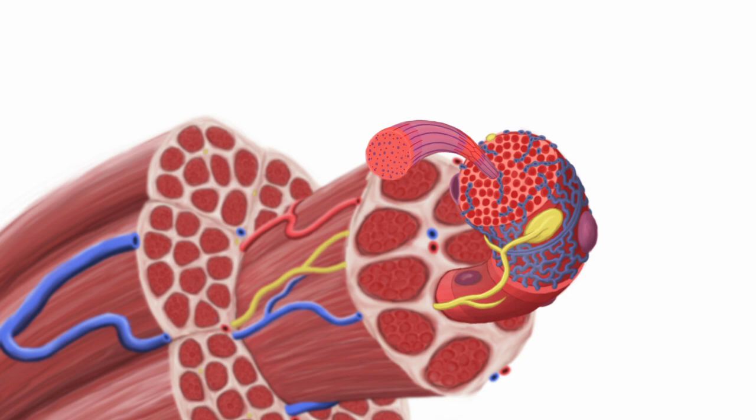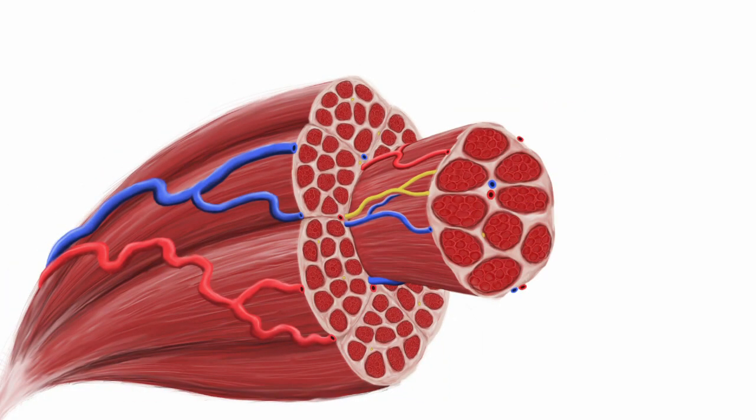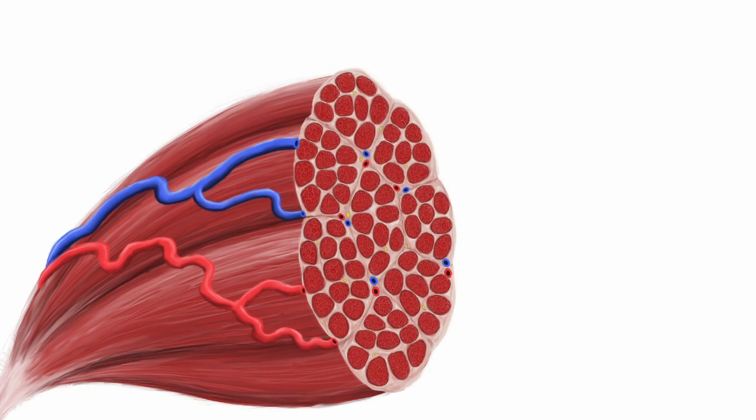When the cell is repaired and rebuilt it now has more nuclei thanks to the myoblasts that merge to rebuild the cell. You can see how the increase in size in the myofibril increases the size of the muscle fiber, which increases the size of the fascicle and thereby increasing the size of the entire muscle.